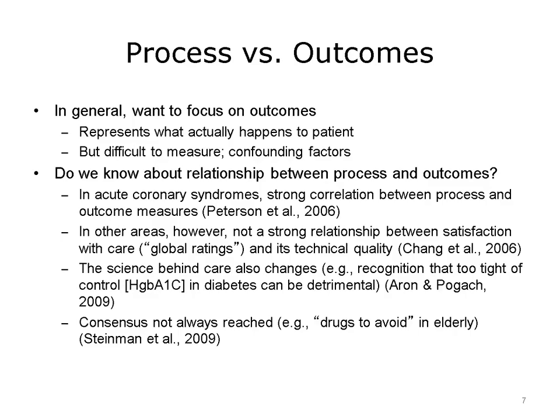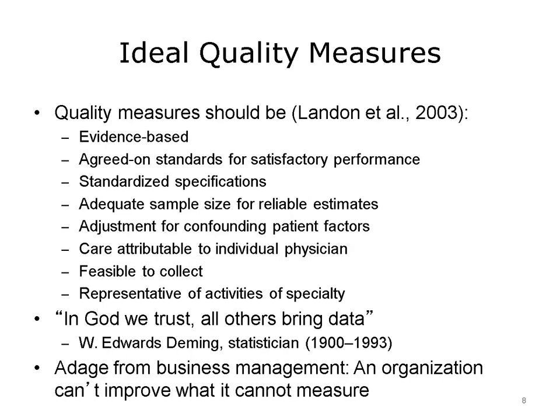Sometimes there's no consensus on the best care. For example, there's a lot of interest, especially with regard to safety, about drugs that physicians should avoid prescribing to the elderly, but it turns out that it's difficult to achieve consensus on what those drugs are. So to assess quality, quality must be measured. Landon advocates that quality measures should be based on the best evidence for health care delivery.